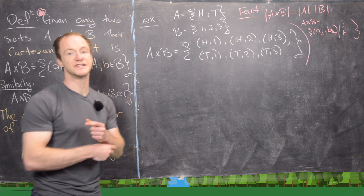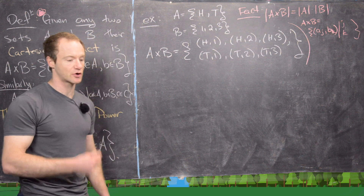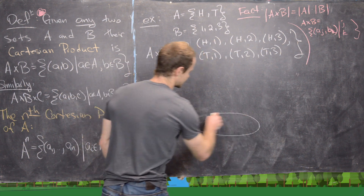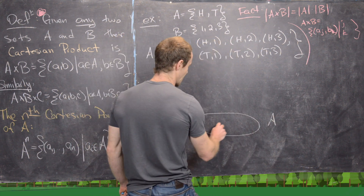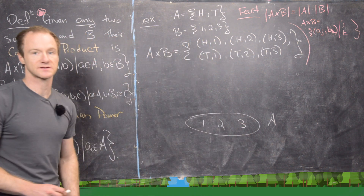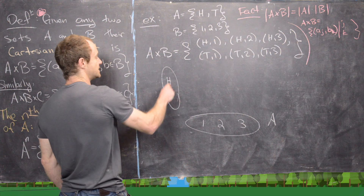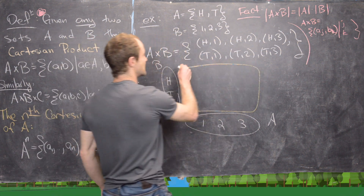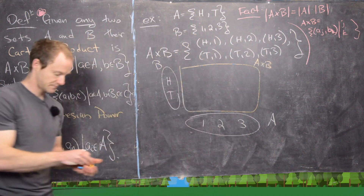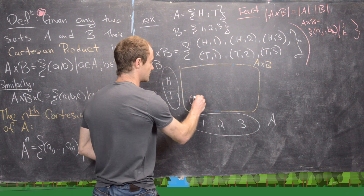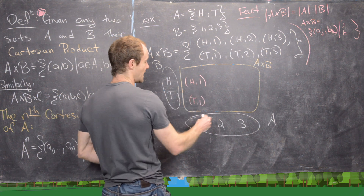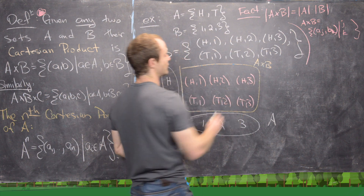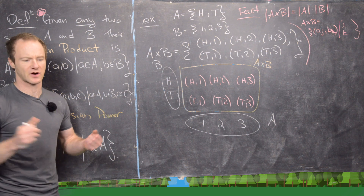Before moving on to the Cartesian coordinate plane, let's visualize this example. Think of the horizontal axis as representing A (three elements) and the vertical axis as representing B (two elements). The cross product gives a grid of points: tails-comma-one, heads-comma-one, heads-two, heads-three, and so on — just like how you visualize the Cartesian coordinate plane.